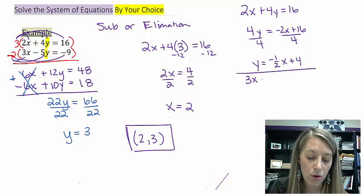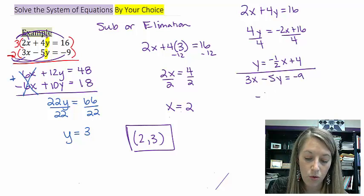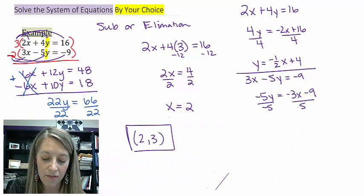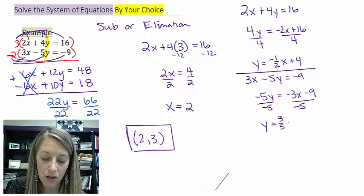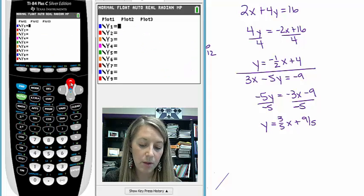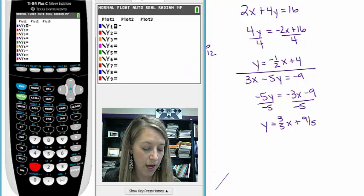I need to do the same thing with the second equation. 3X minus 5Y is equal to negative 9. Move my 3X to the opposite side. Divide by negative 5. Gives me Y is equal to positive 3 fifths X plus 9 fifths. Let me plug both of these into my Y equals on my equation.